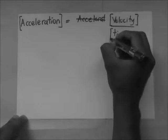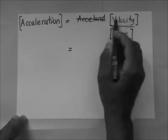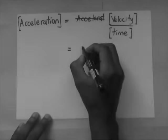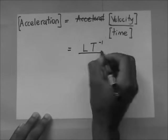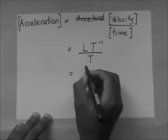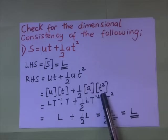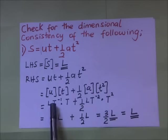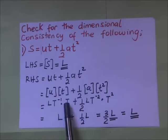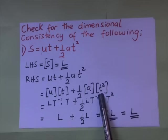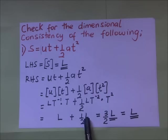Acceleration is the rate of change of velocity, so its dimensions are LT⁻¹ divided by T, which gives LT⁻². Multiplying that by t squared gives LT⁻² × T². Now LT⁻¹ × T: the T⁻¹ and T¹ cancel, leaving L. And LT⁻² × T²: the T⁻² and T² cancel, leaving L. So we get L plus ½L, which equals 3/2 L.